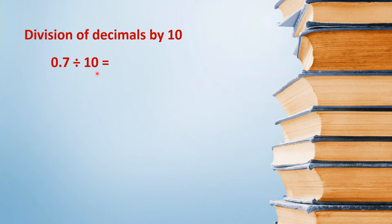0.7 divided by 10. We can write it in the form of a fraction. You know that 0.7 is a decimal number and we write it in the form of a fraction: 7 divided by 10.